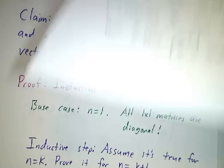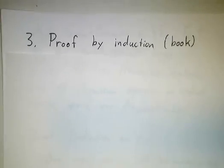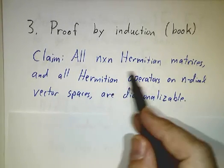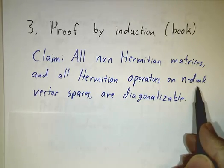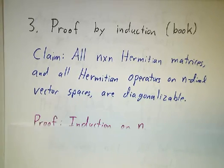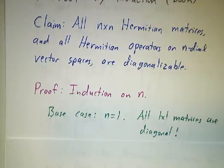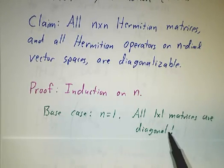The third proof is by induction, and that's the proof given in the book. The claim is that all n by n Hermitian matrices — or equivalently, all Hermitian operators on an n-dimensional vector space — are diagonalizable, and we do it by induction on n. The base case: is it true for n equals 1? Sure — a 1 by 1 matrix is just a number, it's already diagonal. There's nothing but a diagonal on a 1 by 1 matrix.